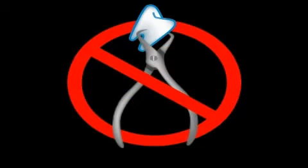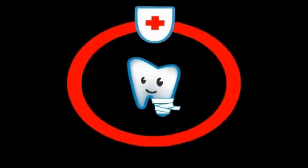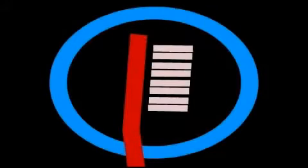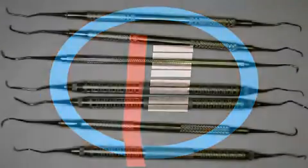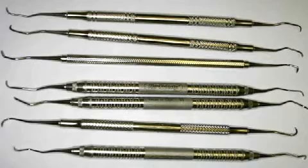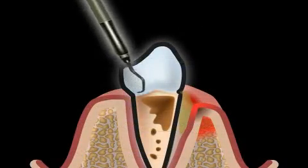At the beginning of periodontal treatment, teeth that aren't worth preserving must be extracted, and necessary root canal treatments must be performed or redone. Afterwards, an intensive cleaning phase with special periodontal instruments takes place, as seen in the image here.